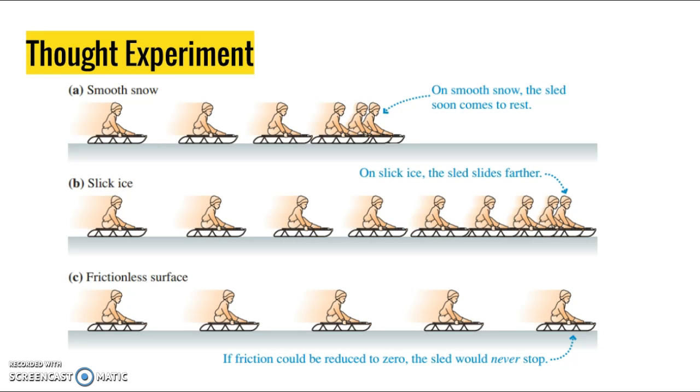We can look at a similar thought experiment to what Galileo was thinking. If someone is sledding on smooth snow, the sled soon comes to rest. But if they were sledding on a slicker surface, such as ice, their sled is going to go further. What happens if we keep making this surface slicker up to the point where there's no friction? Galileo thought about this and realized that if friction could be reduced to zero, the sled would never stop.